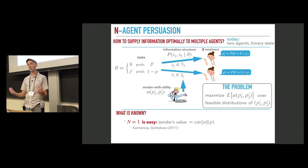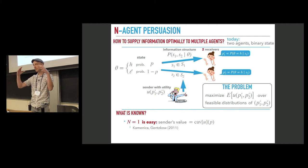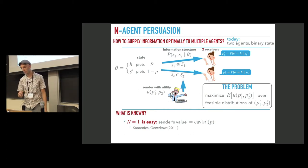The sender's optimal value is given by concavification of his utility function. So it's the minimal concave utility function that is pointwise above his utility and this concavification is taken at the point P, at the prior.